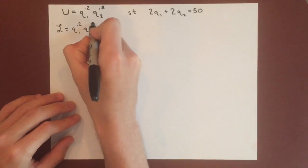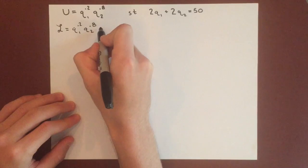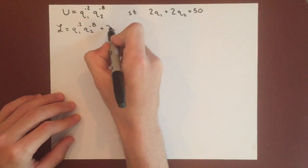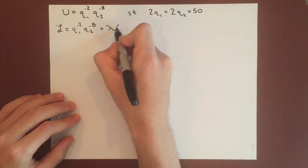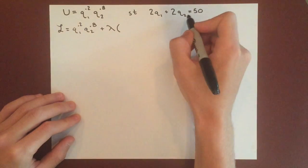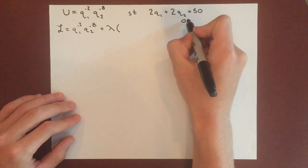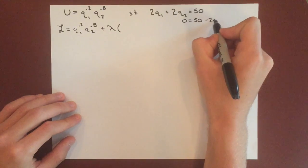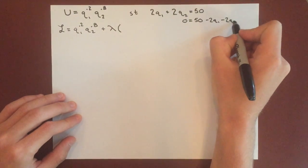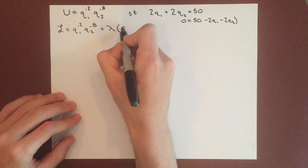We write the utility function, and then plus lambda times the budget, which we can write as 50 minus 2q1 minus 2q2.